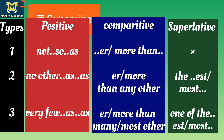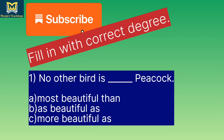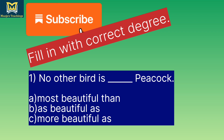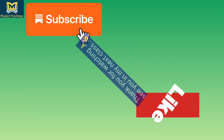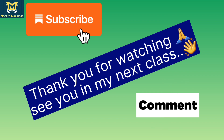Here is a question for you: 'No other bird is dash peacock.' Options: A. Most beautiful than. B. As beautiful as. C. More beautiful as. Give your answer in the comment section. If you like the video, kindly subscribe, like, comment and share. Thank you for watching. Bye-bye.